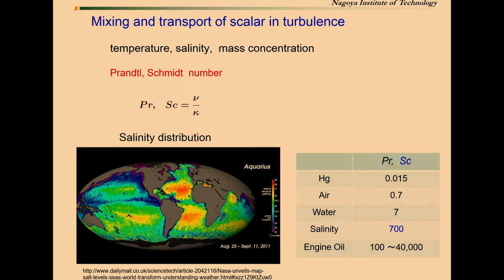The Schmidt number can vary quite a wide range. For Mercury, it's about 0.015. For air it's 0.7. For water it's about 7. And for salinity, it's about 700. Or for engine oil, it's quite large, 100 to 40,000. This is an example of the salinity distribution in the ocean. You can see that the salinity in the Atlantic Ocean is quite high when compared to the Pacific.